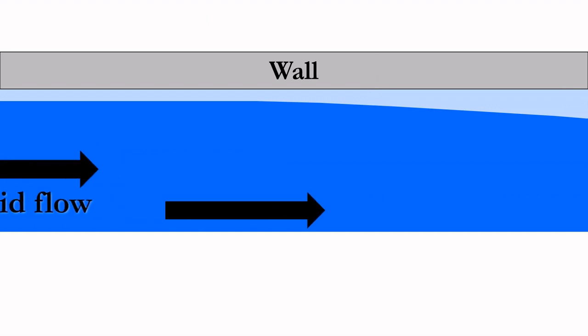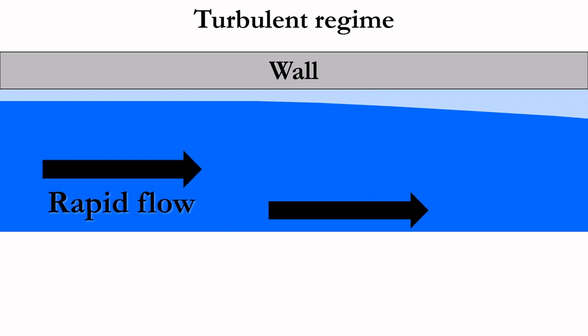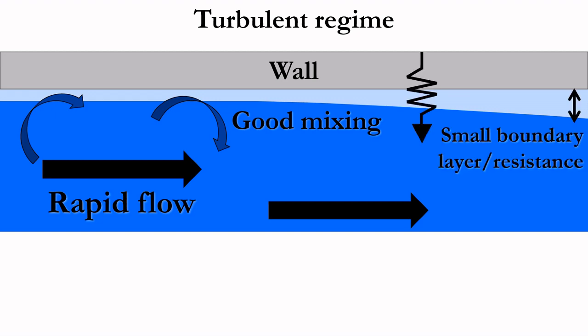With a sufficiently fast flow rate, the fluid is in the turbulent flow regime, where there is significant mixing of fluid at the wall, resulting in a small boundary layer.